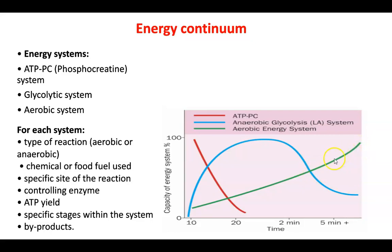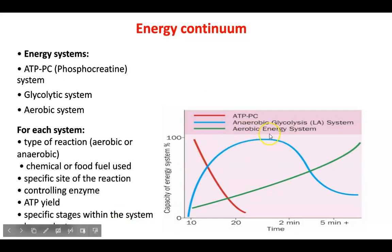The aerobic energy system is being used in some small form throughout the first couple of minutes. However, we are talking about the predominant energy system being used. All three are being used at one time, but one is more predominant than the others — ATP-PC for the first 10 seconds, glycolytic from 10 seconds to 3 minutes, and aerobic from 3 minutes to 5 hours.